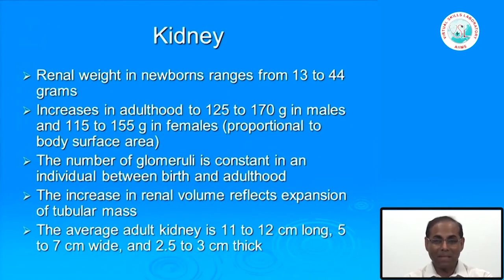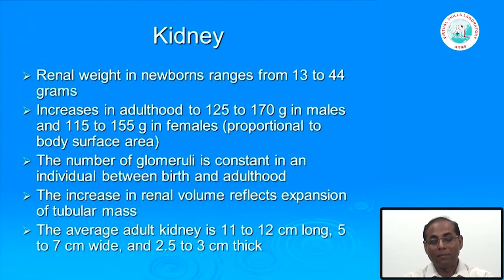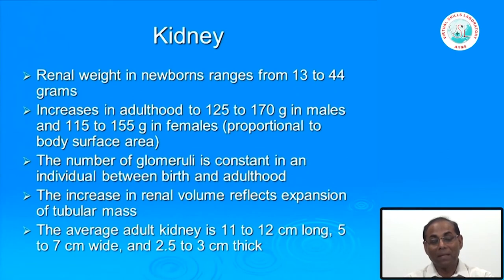There are certain basic things we should remember. In the newborn, kidney weight ranges from 13 to 44 grams, and it increases in adulthood to 125 to 170 grams in males and 115 to 155 grams in females. The weight of the kidney is usually proportional to body surface area. Interestingly, the number of glomeruli is constant in an individual from birth to adulthood.